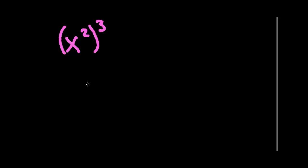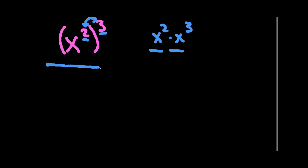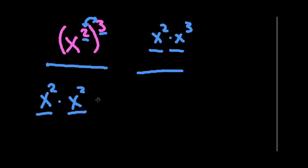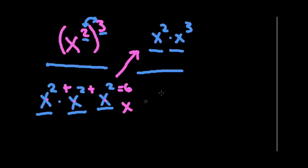Now let me show how that's different from a power to a power. Notice here we do not have two x's — we have x squared raised to the third. That is different from two x's sitting next to each other each with its own base. For a power to a power, we think of it as x squared times itself three times, then add those exponents to get x to the sixth. That's x to the sixth, versus the previous example which was x to the fifth.